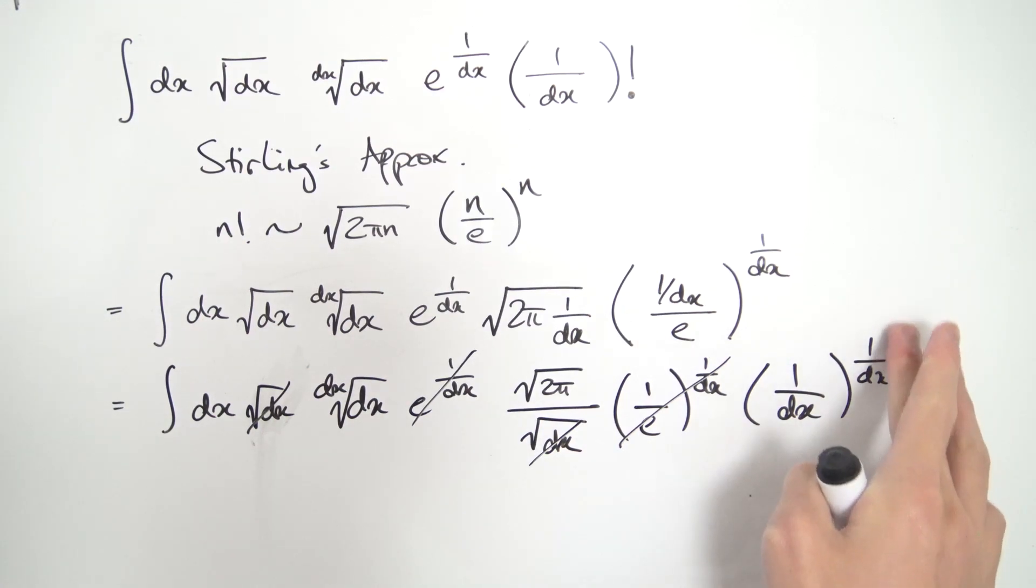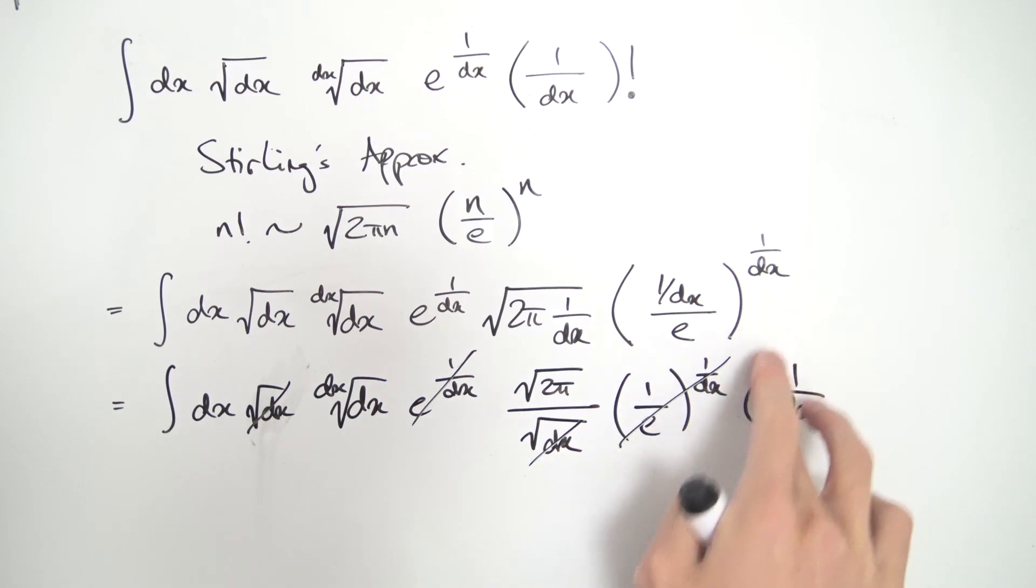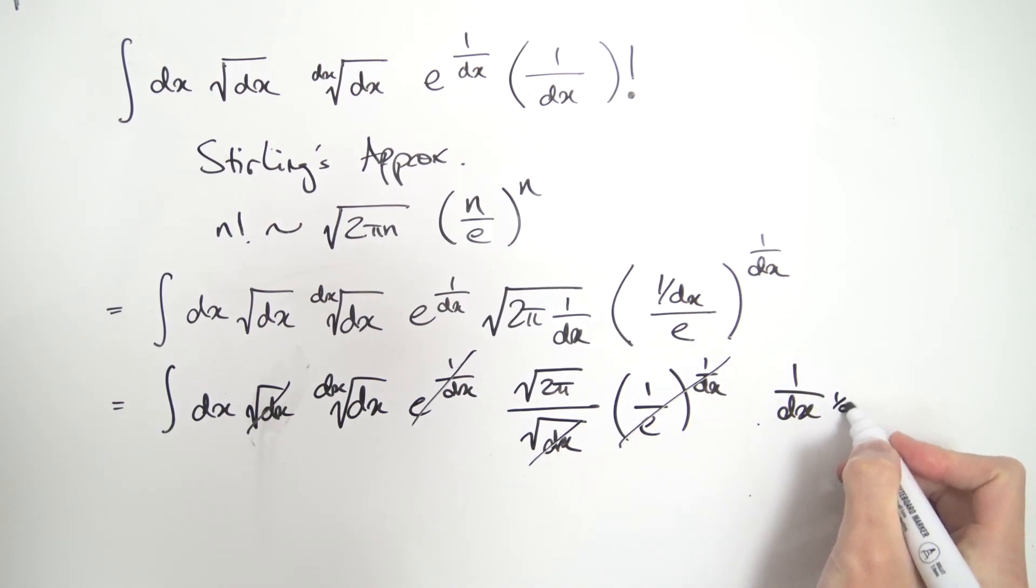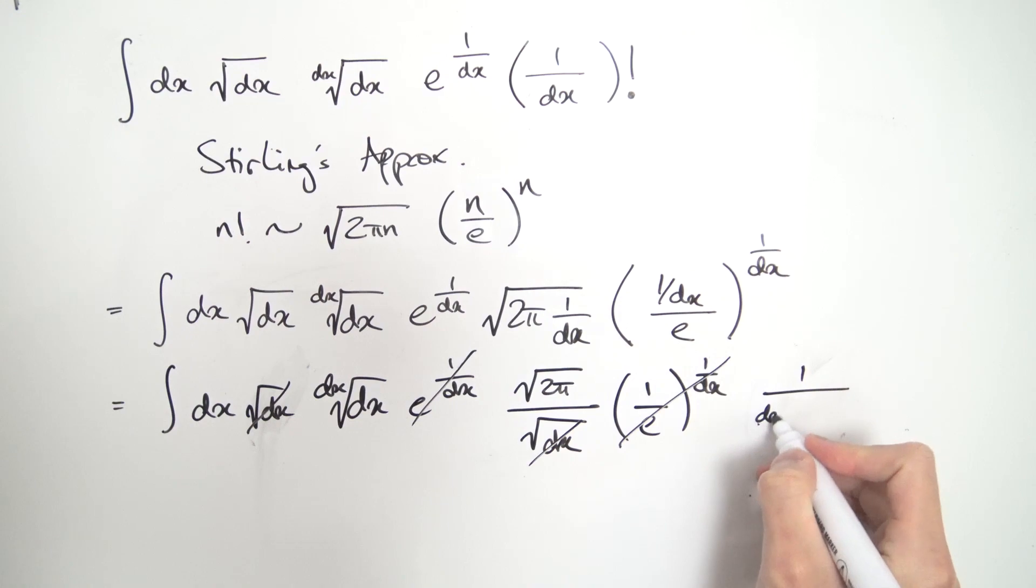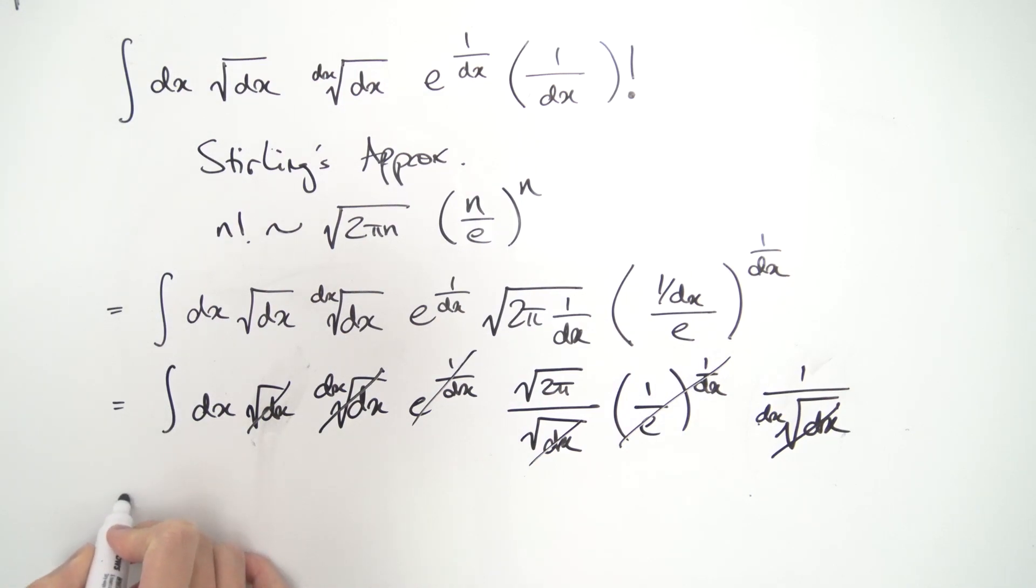Well, notice here, you can drag this 1 over dx into the denominator. So we have 1 over dx as a power, but 1 over dx, that's the same thing as dx root. So notice this generates a 1 over dx root of dx. And that's nice because this guy cancels over here. So a bunch of things cancel out.